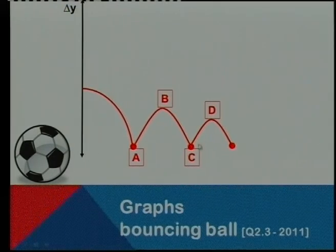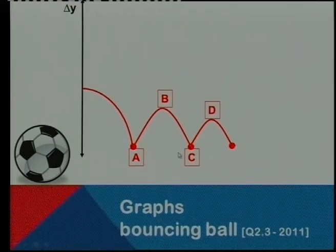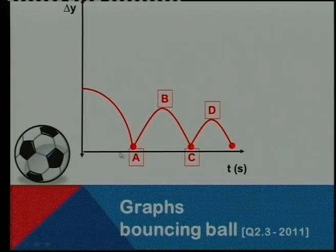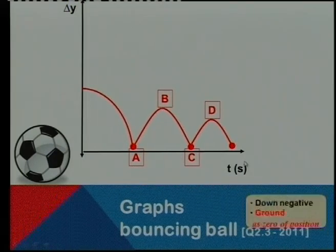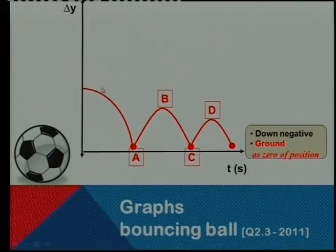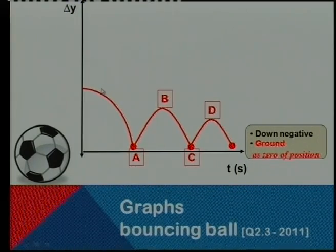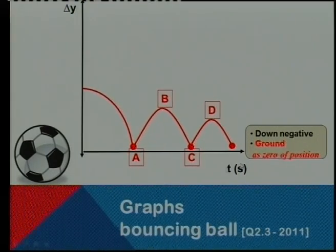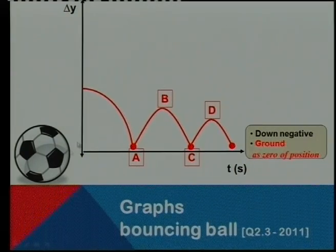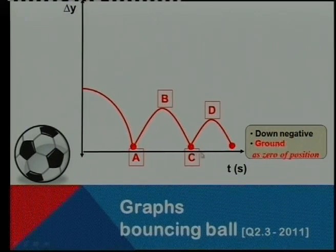But the examiner never really gives us such an easy two marks in section A. For instance, if we have to draw the x-axis, the time axis there, then we would say that down is negative, negative becoming less, or if we take the tangent there, the gradient there, you would see the gradient is negative, and the ground is a zero position. In other words, our zero point is everywhere where the ball touches the ground.